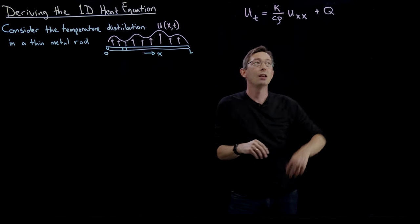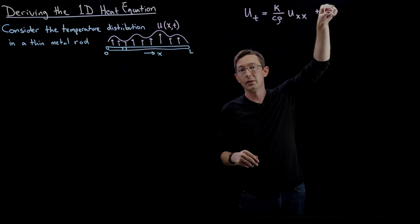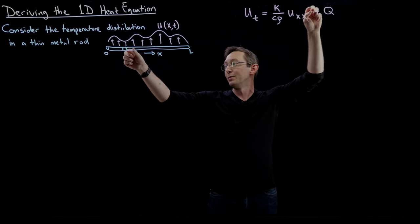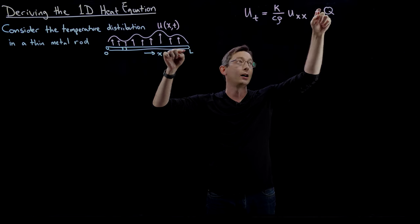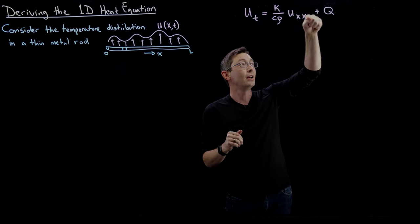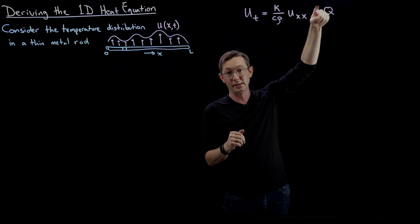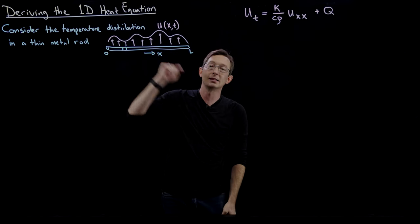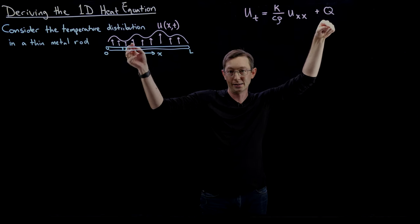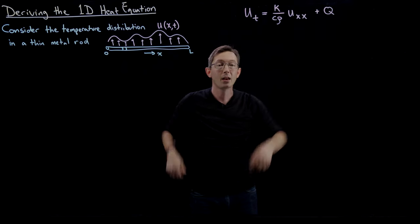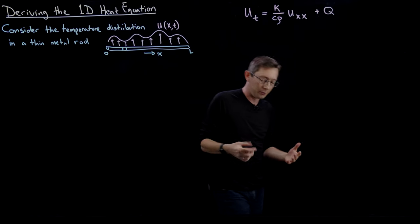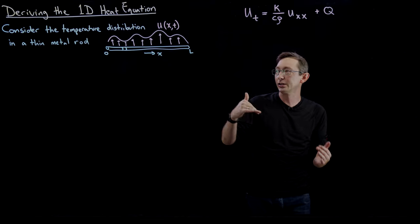If you have forcing — maybe this rod is radiating heat to the outside, or maybe it's a plutonium rod creating heat through atomic fission — this Q term accounts for all those heat sources. Or maybe you hit it with a blow torch at some point; that would be a delta function at that point x for as long as the blow torch is on. We derived this system, and today I want to show you how to solve for the steady-state heat distribution given different boundary and initial conditions.